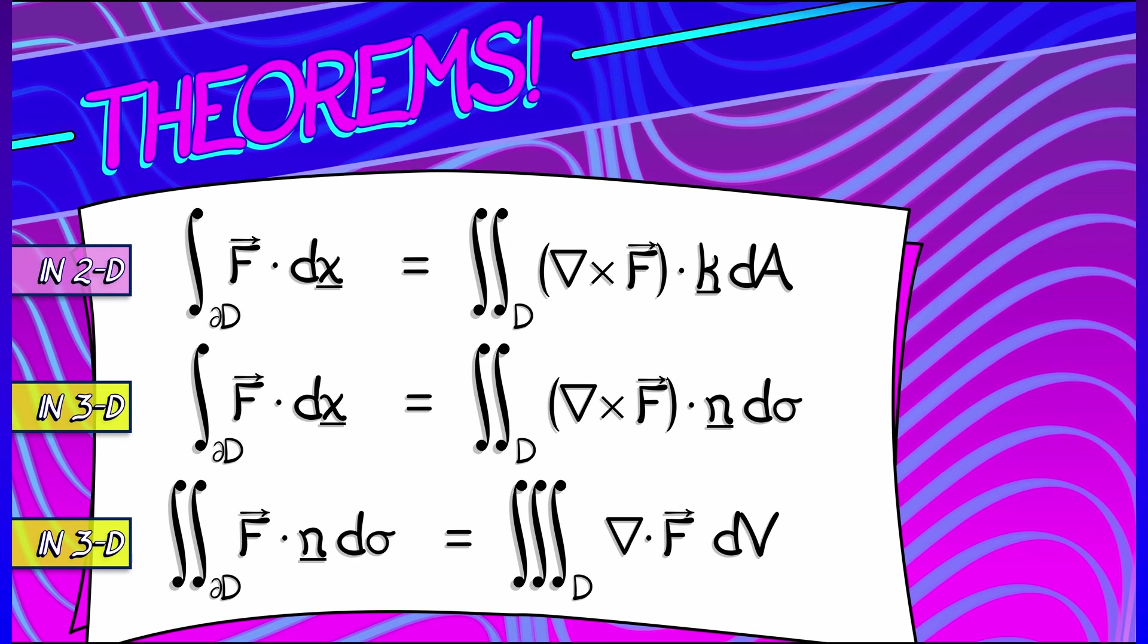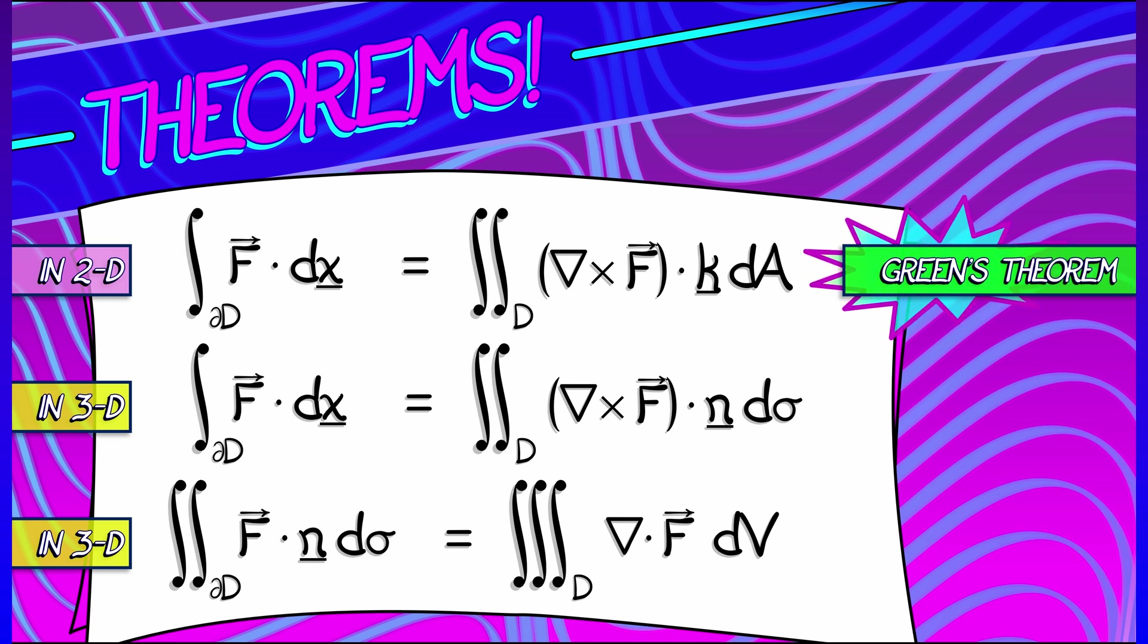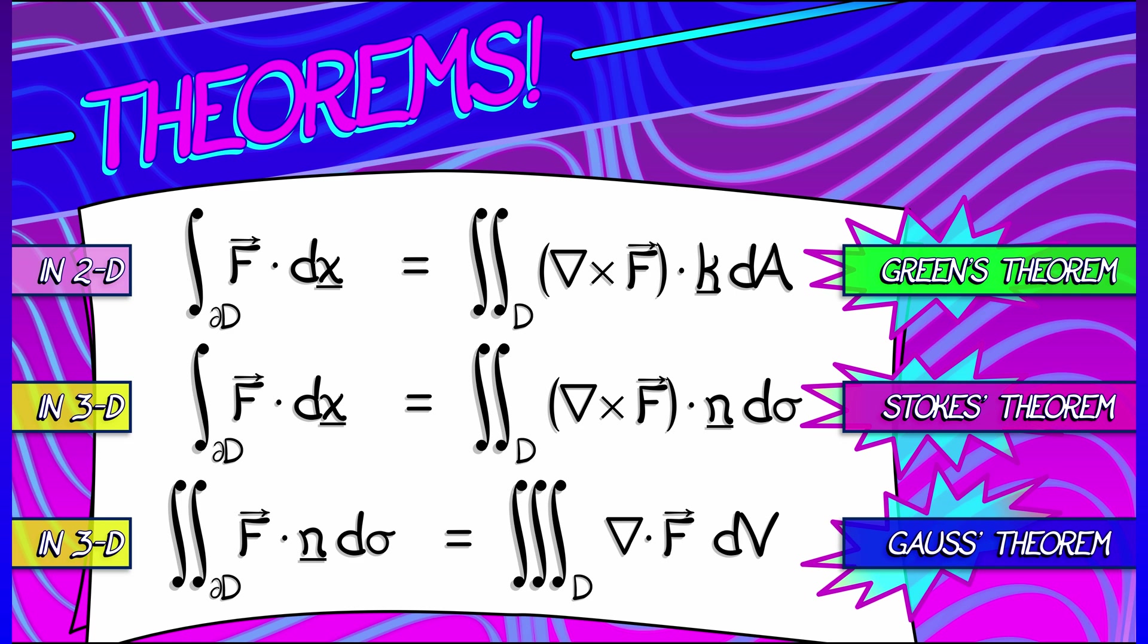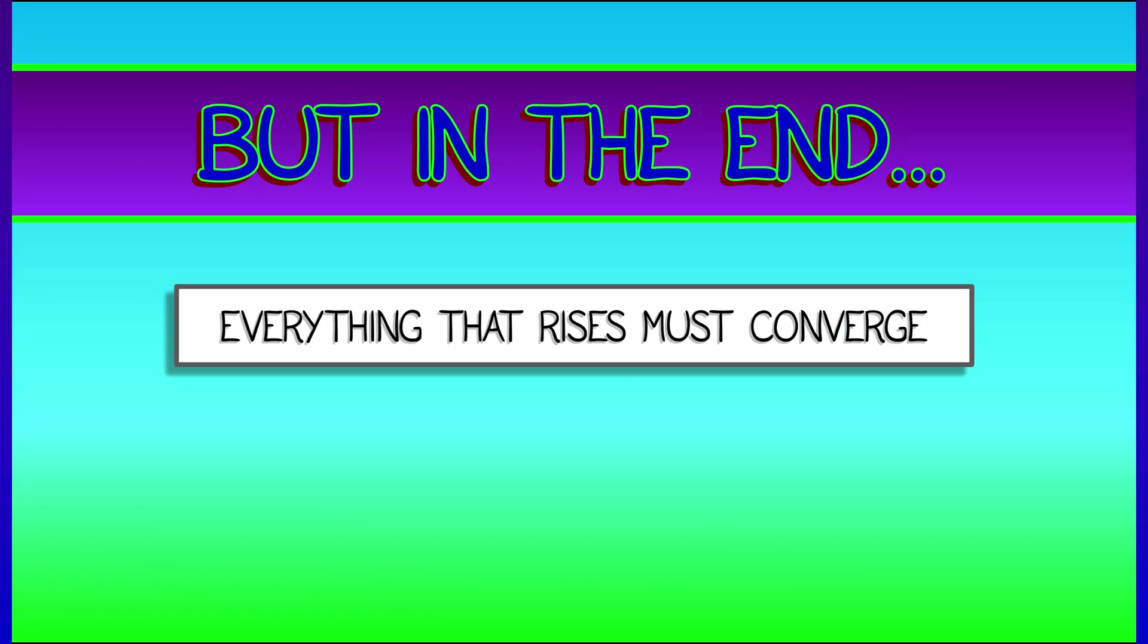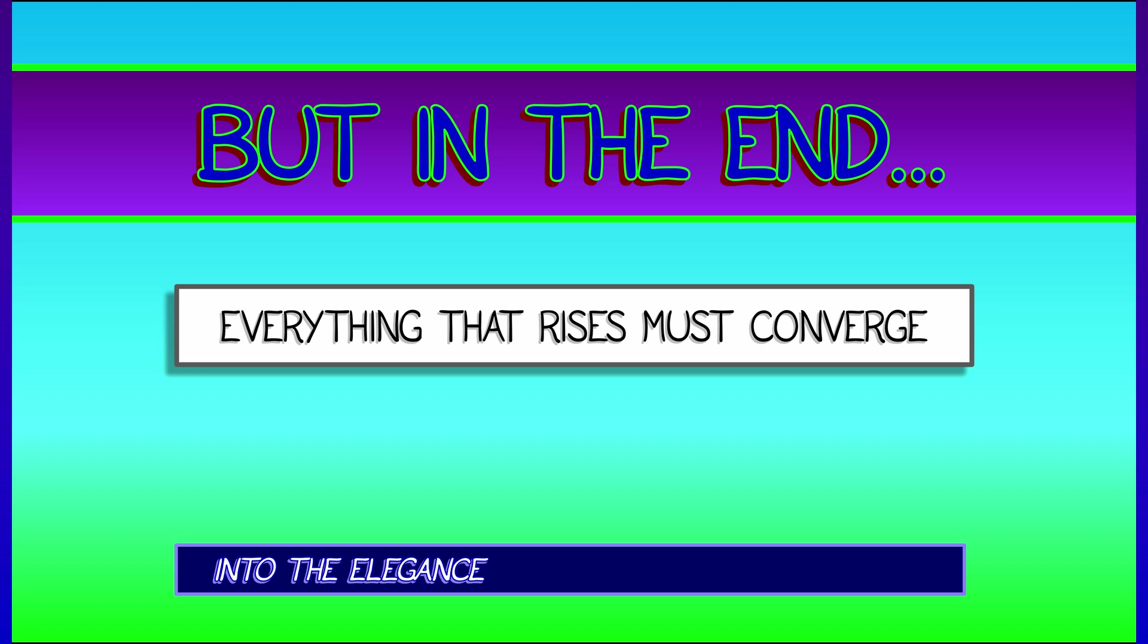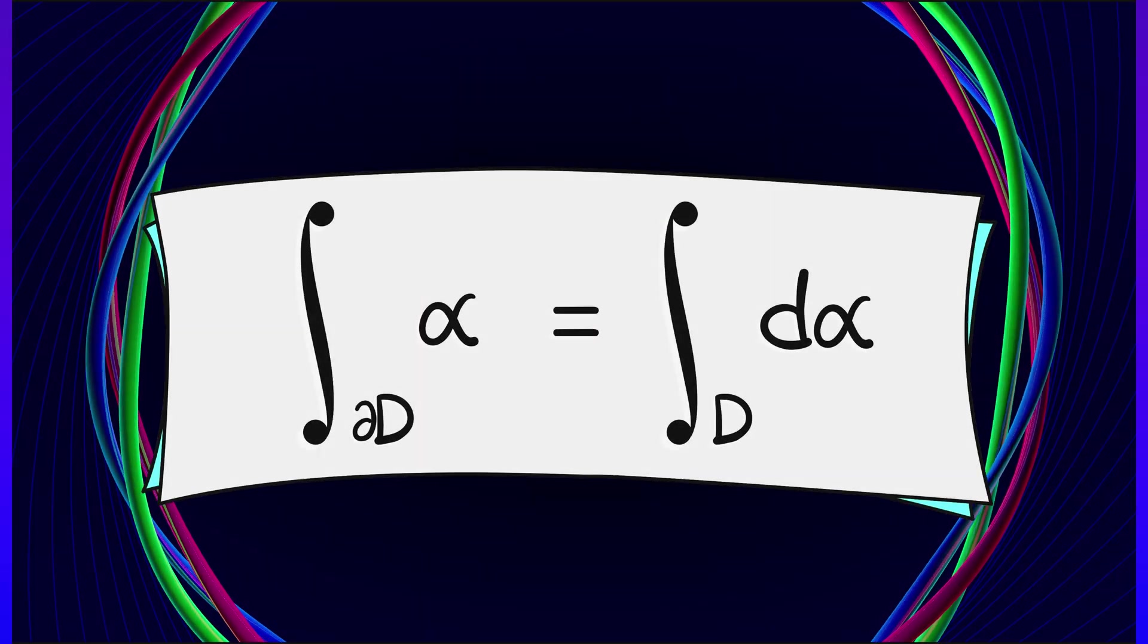They are Green's theorem in 2D and then Stokes' theorem and Gauss' theorem in 3D. Now, they look a little complicated. They are a little complicated. But in the end, everything that we have learned in multivariable calculus is going to converge into one elegant fundamental theorem. This theorem is our true goal.